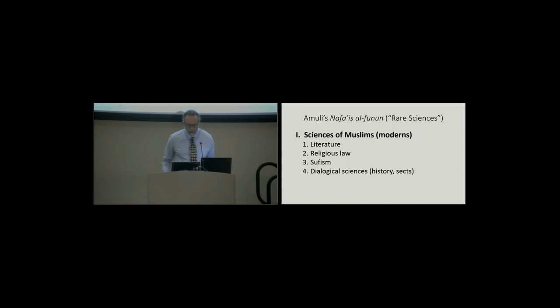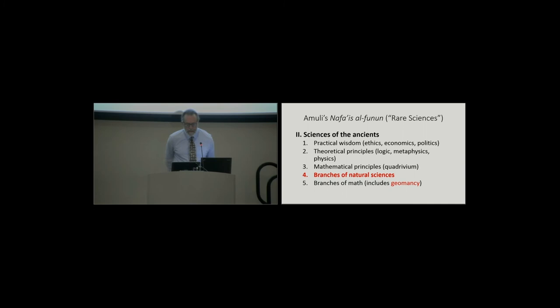So the first of the two sections he calls the sciences of the Muslims or the moderns and he divides it into four branches. First literature, second religious law, third Sufism, look how prominent it is there. And then what he calls the dialogical sciences which have to do with history and sectarian groups in Muslim history and the like. And then part two he calls the sciences of the ancients. This corresponds to the rational sciences of Ibn Khaldun. And he talks about practical wisdom, theoretical principles, mathematical principles, and then I've highlighted the branches of the natural sciences because that's where he puts the sciences of the hidden, the occult sciences. And then he concludes with the branches of mathematics where there's one divination practice, geomancy, which is known in Arabic as ramul.